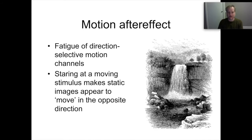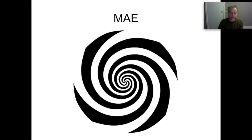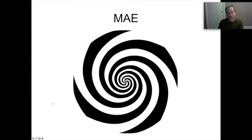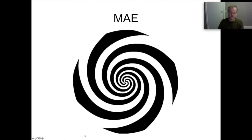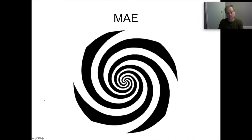We can do the same with motion aftereffects. Directions of motion exist in opponent pairs: staring at a waterfall moving downward tires out downward-motion receptors, so looking at something stationary afterward gives illusory upward motion — the same opponent mechanism as with color. Here with a spiral pattern: focus on the center for several seconds, then look at something stationary — your hand, a wall — and you'll see illusory motion in the opposite direction. A complex motion stimulus gives the same sort of motion aftereffect pattern.